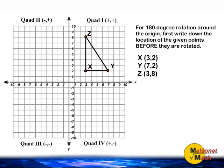Point X is located at (3,2), Y is located at positive 7 and positive 2, and Z is located at positive 3 and positive 8. Notice that all of our values are positive because they are located in quadrant number 1.